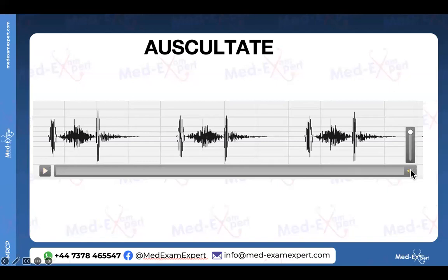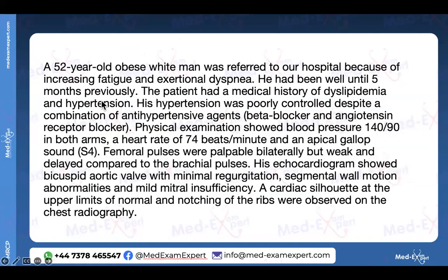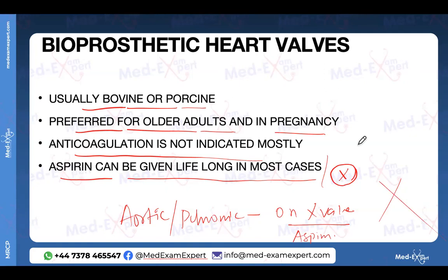Now comes another condition — another murmur. Here is the history: a 52-year-old obese white man with increasing fatigue and exertional dyspnea. He has been well until five months ago. He has a history of dyslipidemia, and his hypertension is poorly controlled despite combination antihypertensive agents — beta-blocker and ARB have been added — and blood pressure remains at 140/90.